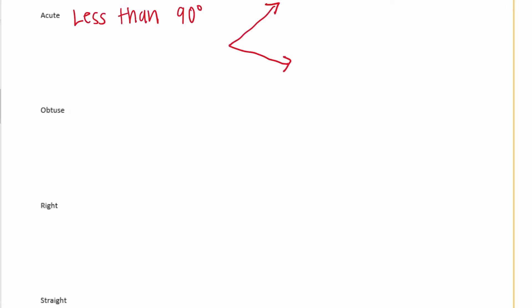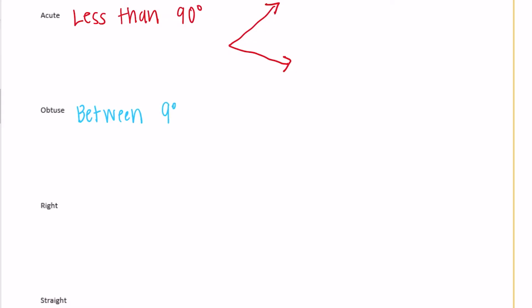An obtuse angle would be greater than 90 degrees. Actually, we can make that more specific — it's between 90 degrees and 180 degrees. So something like that. I'm going to change it because that looks kind of like 90 degrees, so I'm going to make it like that. So that angle right there is an obtuse angle.